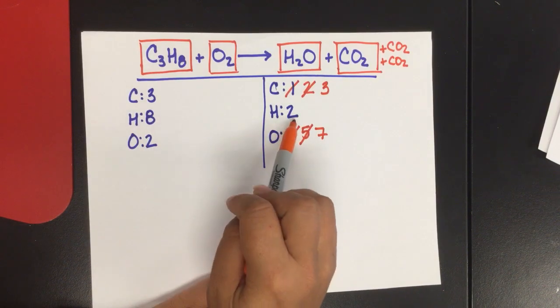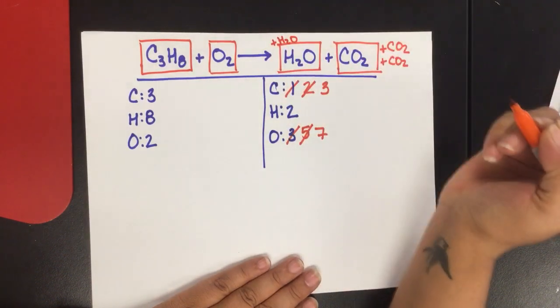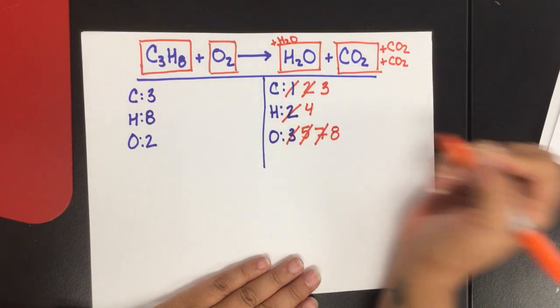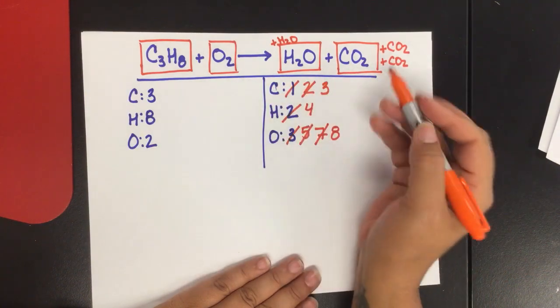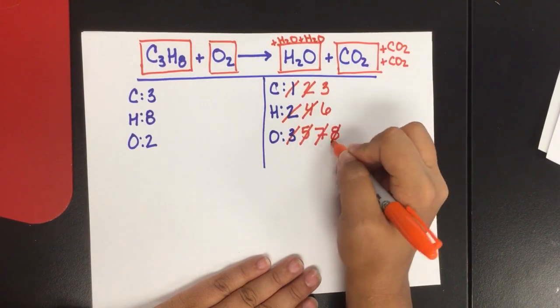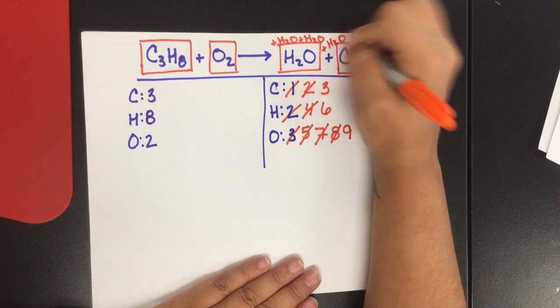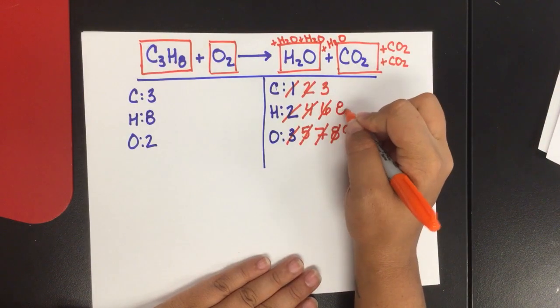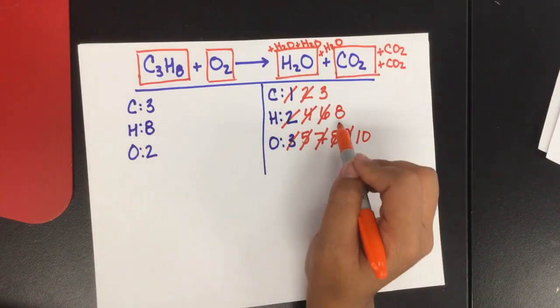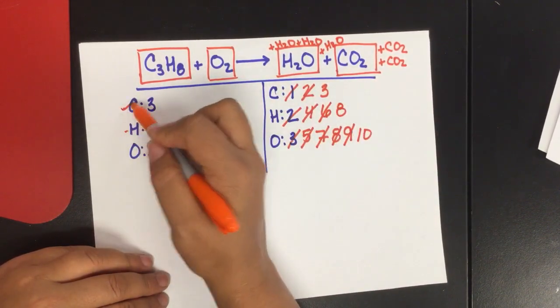So let's go to hydrogen. There's eight on the reactant side, two on the product side. So if I add an H2O, I've added two more hydrogen, so that's four, and one more oxygen. Still not quite there, so I'll add another H2O. That becomes six and nine. Still not there. Add another H2O. That becomes eight and that becomes ten. My hydrogen, eight and eight, perfectly balanced. So my carbon is done, my hydrogen is done. That's exciting.